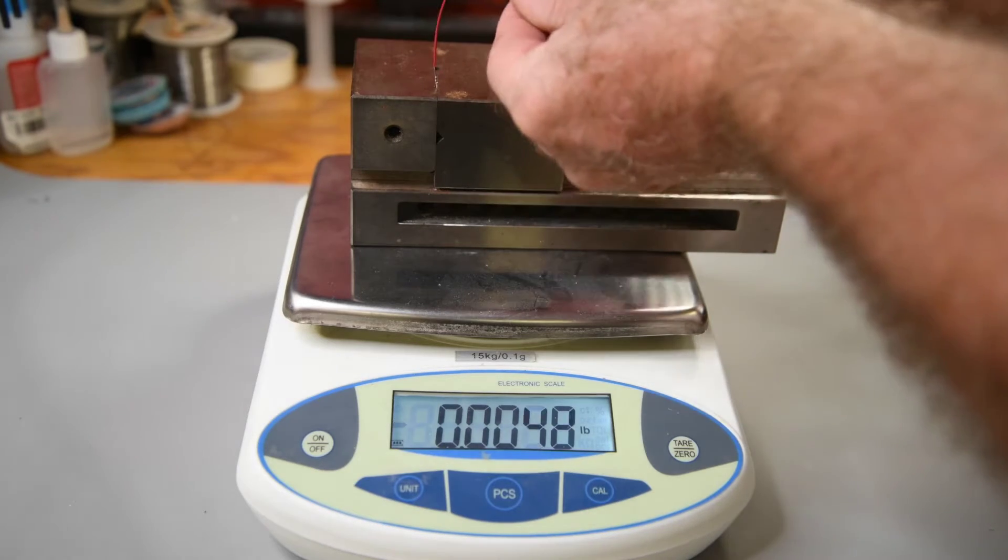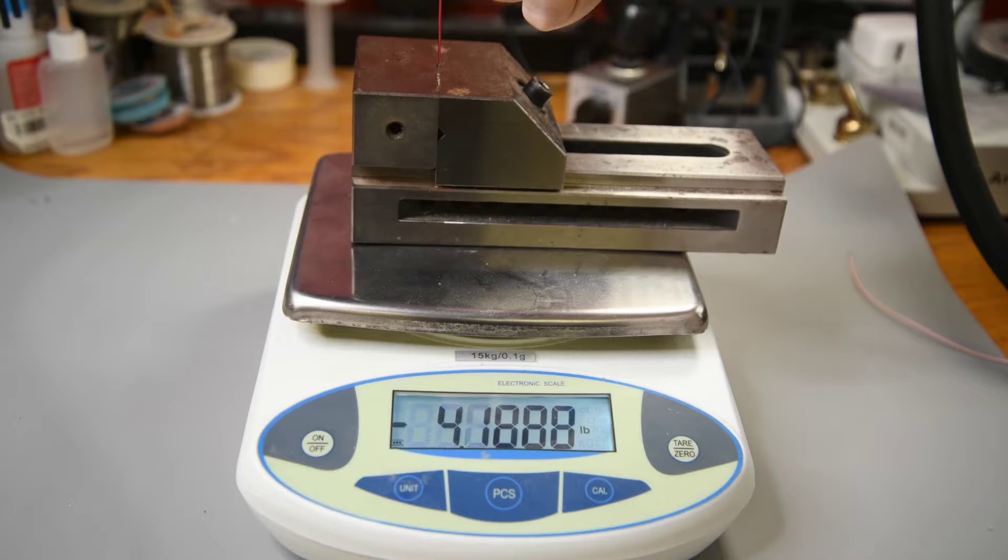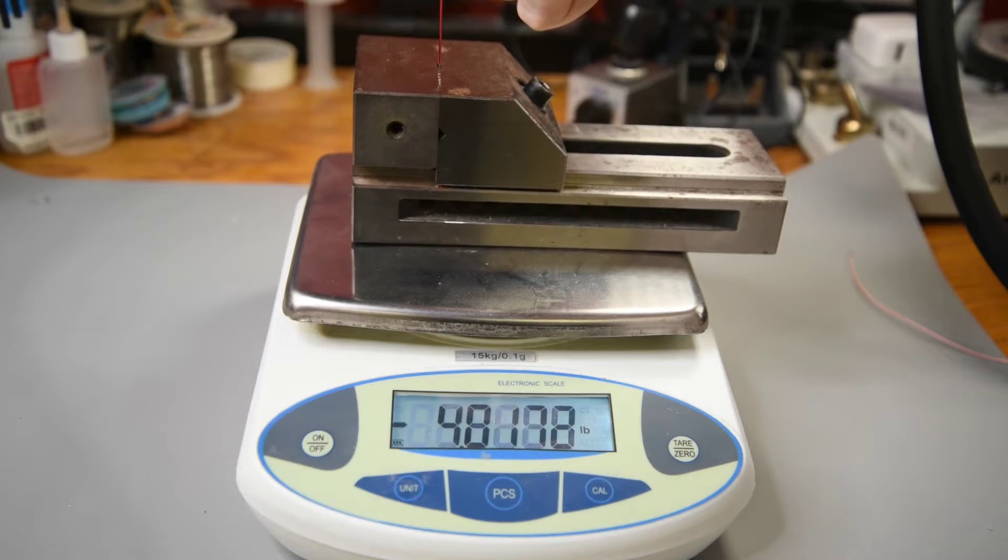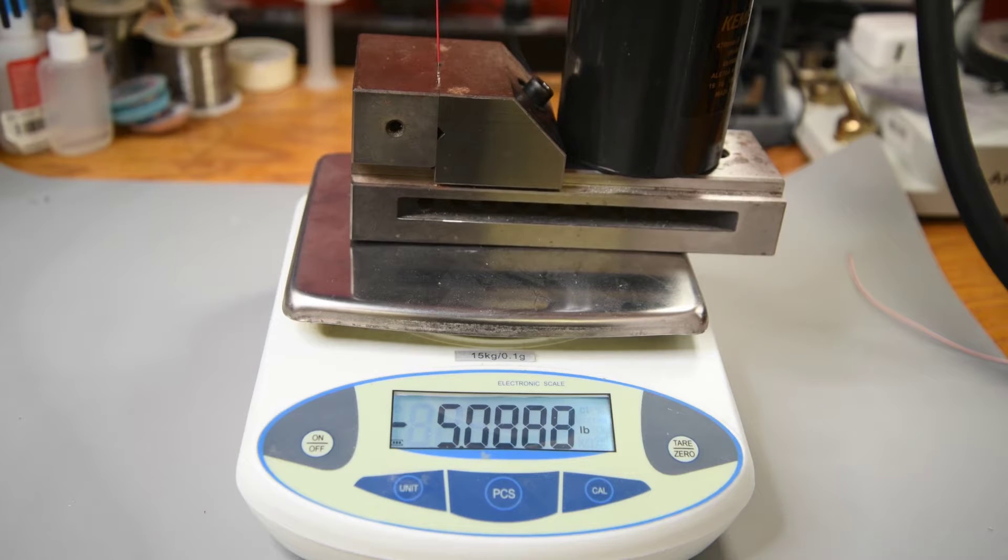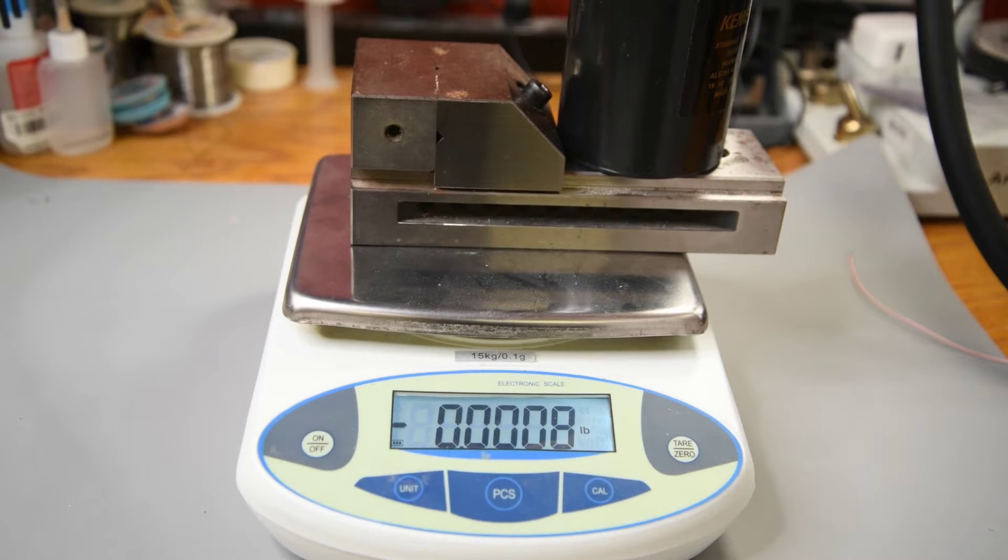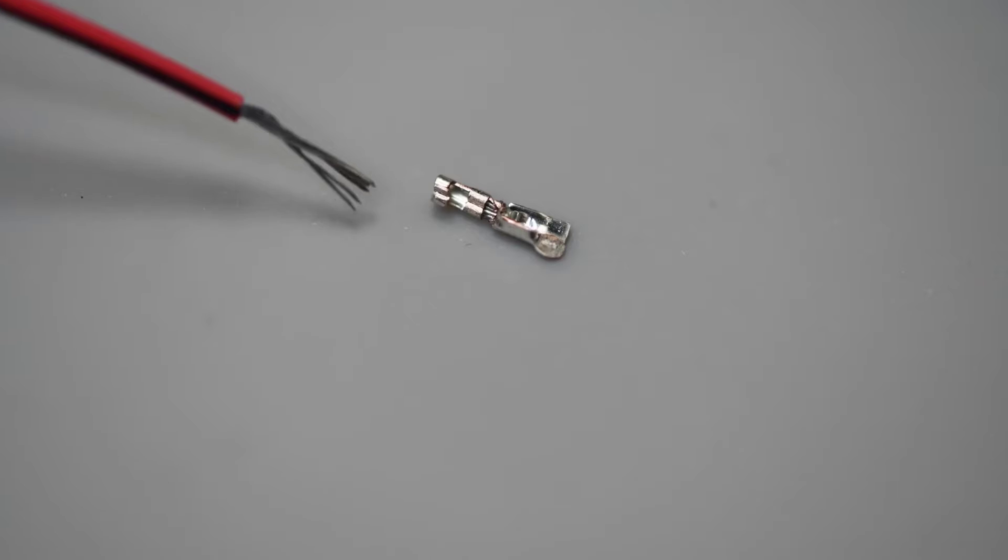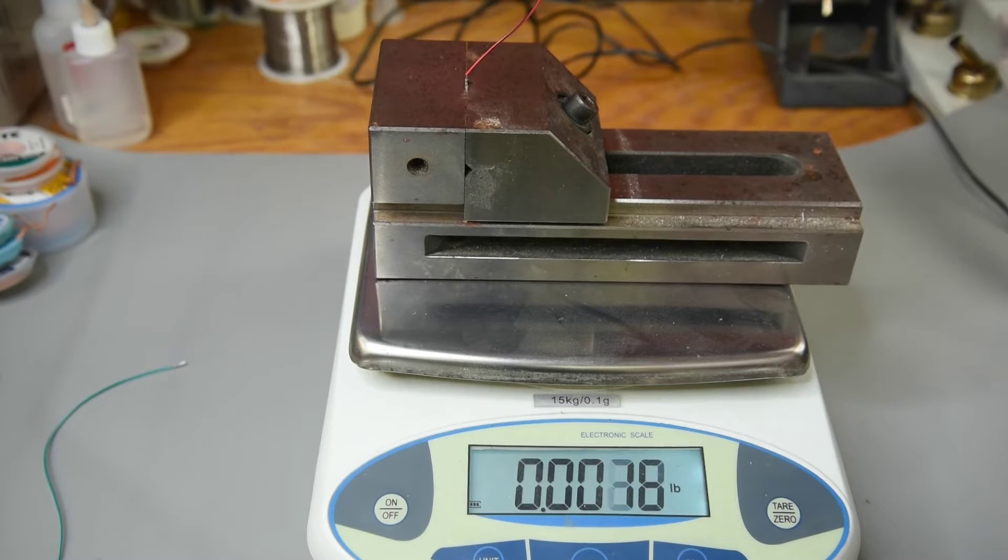This vise weighs around 8 pounds. I'll clamp the end of the terminal into it. I'll pull straight up on the wire. Well, I'm lifting the vise. Let me add a bit more weight. Looks like almost 5.5 pounds. That is way more than I was expecting. 26 gauge is a pretty small wire. And it turns out the wire didn't even pull out of the crimp. It broke off right at the crimp. Maybe I even damaged the wire at the crimp by over-crimping it a bit. I'll try it again with a bit less crimp pressure.